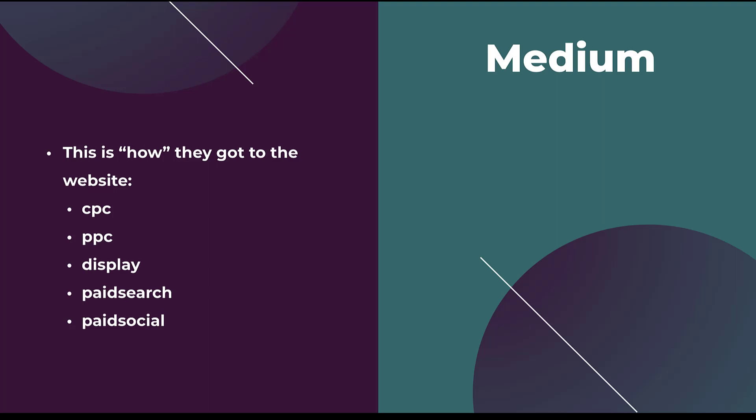The next parameter is going to be Medium — and this in my mind is how they got to the website. Since we're talking about paid advertising on this channel, all of these are going to be some iteration of a paid tactic. I typically fall into the camp of somebody who always uses CPC for this, because I like to have all of my tactics lumped together and then segment out the different strategies based on the source, campaign name, and other factors. But other people like to separate medium out. Some people like to use PPC instead of CPC, and even more, some people like to have strategies broken out by targeting type — whether it's display, paid search, or paid social. Just make sure that whatever you choose, you stick with it over the long haul.